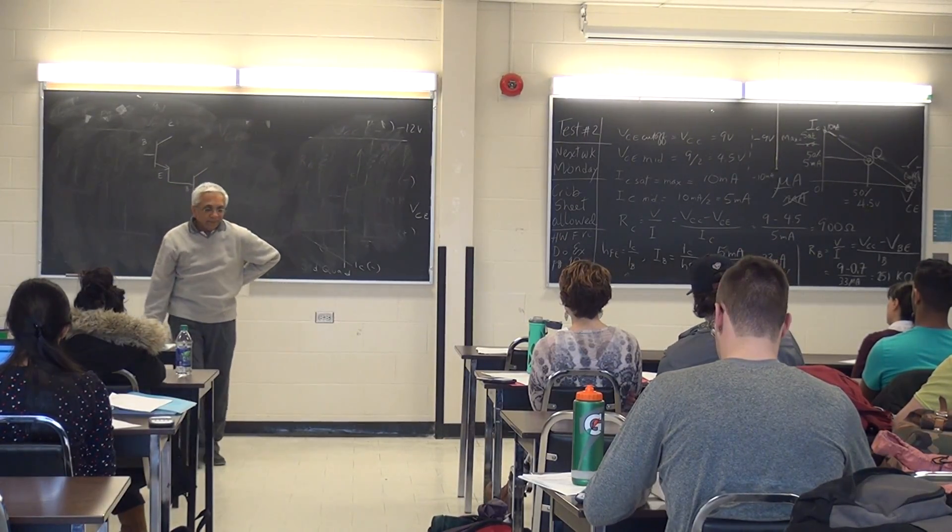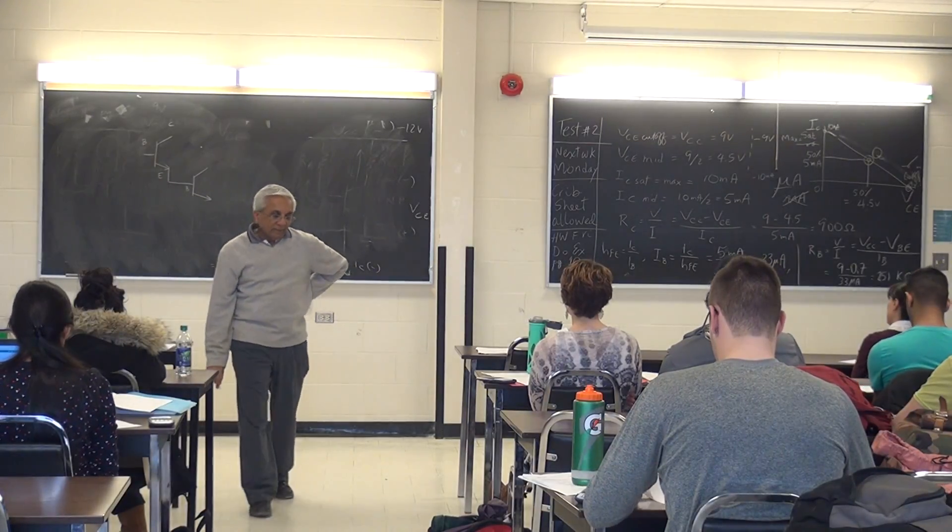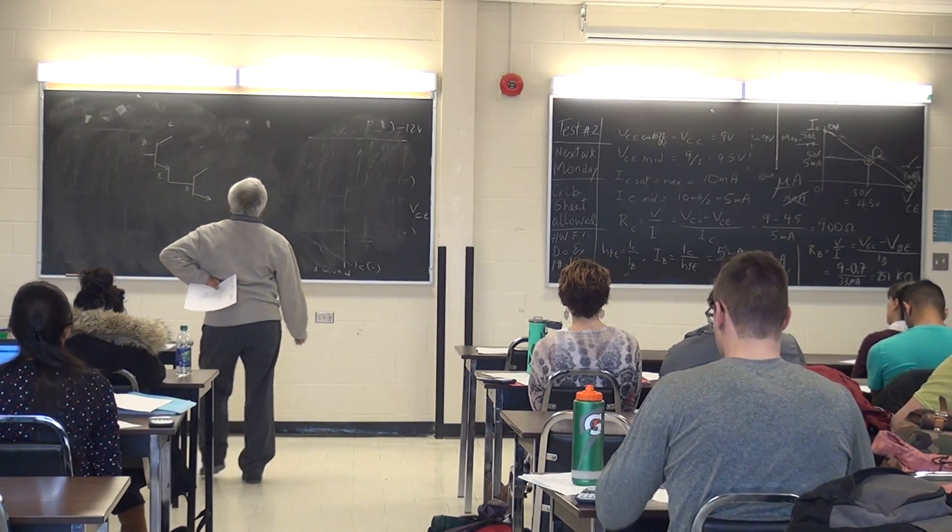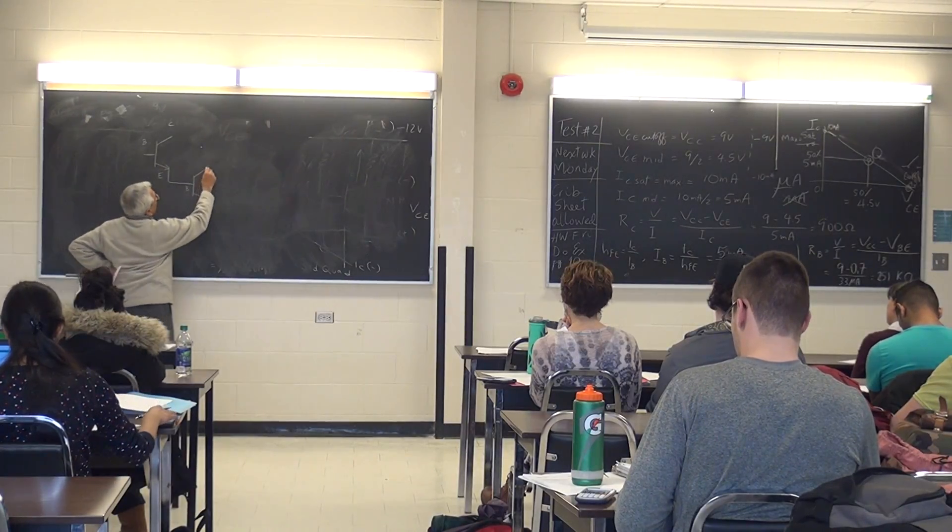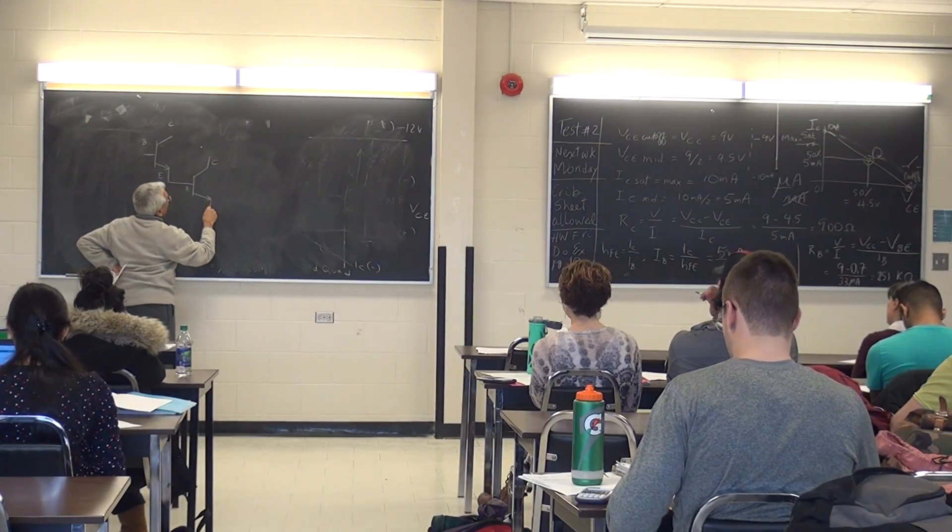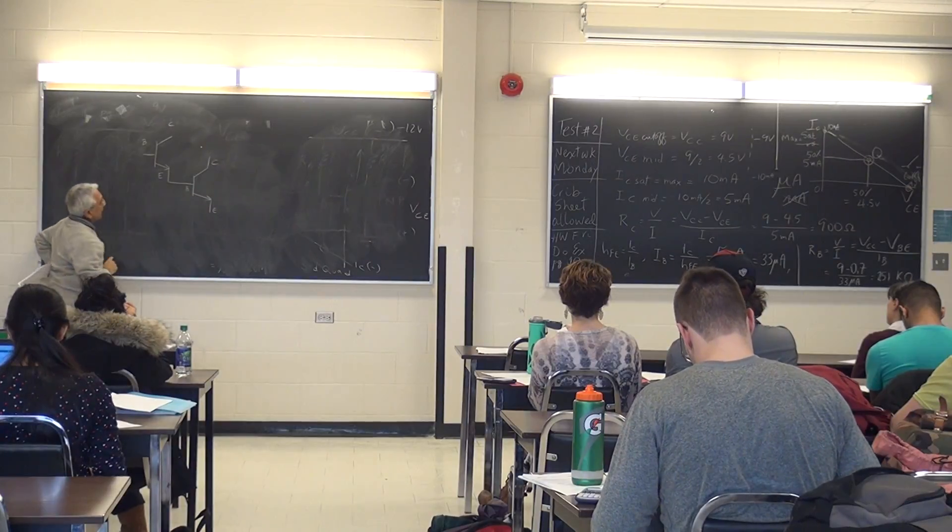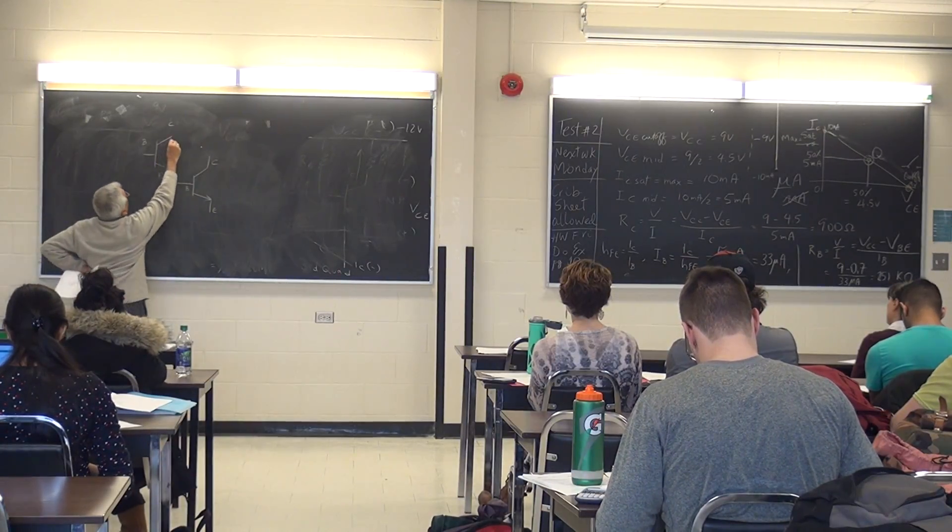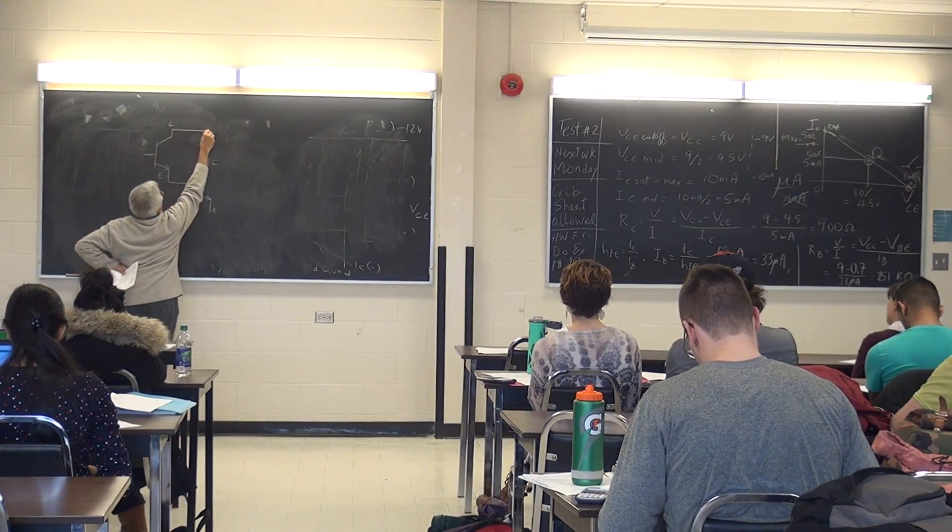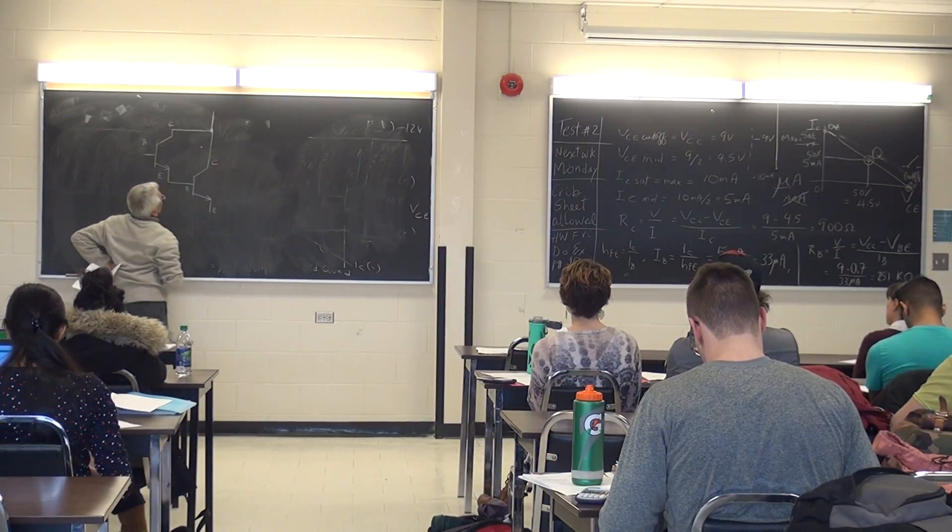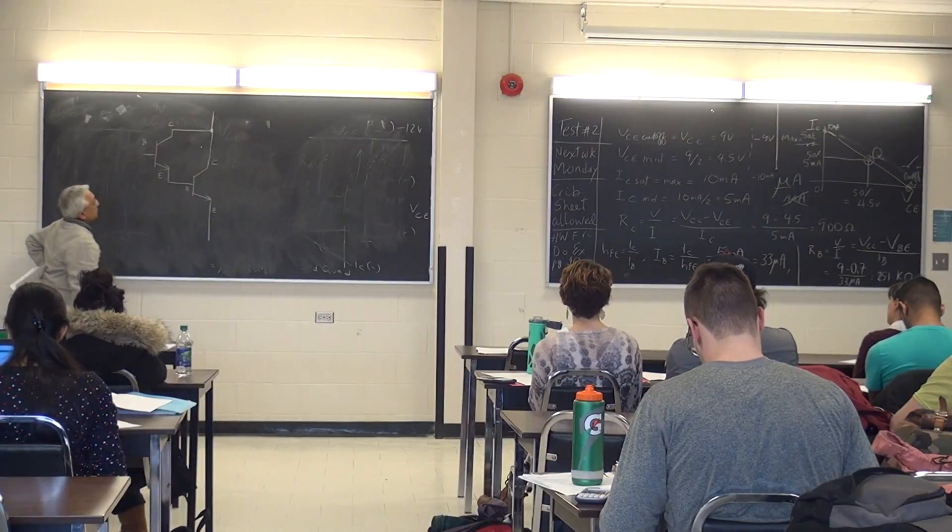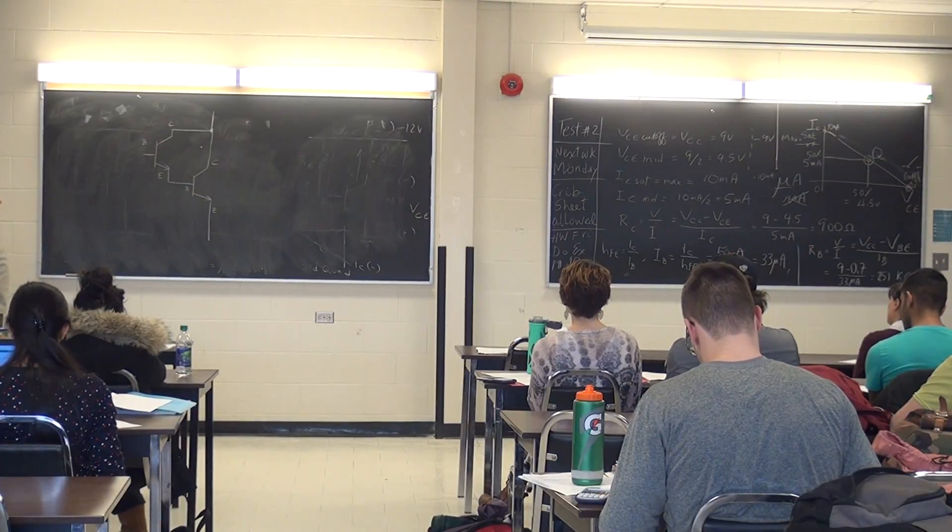So when I do this, it becomes a special circuit called a Darlington pair. And then what I do is here's my collector of the second, emitter of the second. I connect the collector of the first with the collector of the second, and that's my circuit.